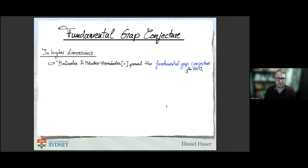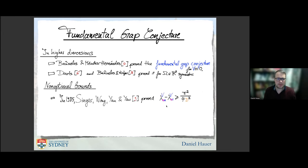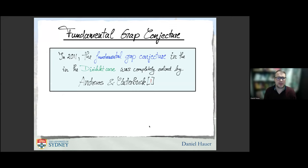In higher dimensions, Bañuelos, Mendes, and Hernandez proved the fundamental gap conjecture only when V is zero potential. And Davis, Bañuelos, and Kroeger proved it in dimension two when omega is symmetric. They use a reduction of dimension argument, and that's where the symmetry is used. Non-optimal bounds were established using Harnack inequalities by Singer, Wong, Yau, and Yau in 1985. This was slightly improved by Yu and Zhong with π²/D². So it took quite a while until 2011, until my collaborators Ben Andrews and Julie Clutterbuck finally proved the fundamental gap conjecture for general convex potentials for homogeneous Dirichlet boundary conditions.